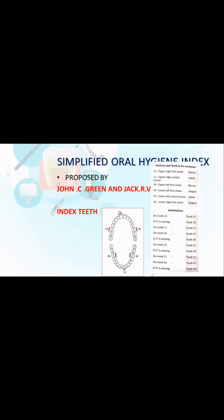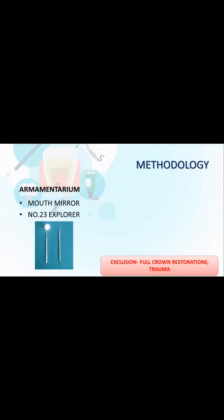For tooth 16, if absent, we substitute with 17; if 17 is also missing, we go to 19 if it is functional. The same applies for 26. If 11 is missing, we substitute with 21; if 21 is also missing, there is no substitution. In the lower arch, if a first molar (6) is missing, we go to 7, then to 8 if functional. For anteriors, if 31 is missing we use 41; if the anterior is missing in the upper arch we use 21. If the substituted tooth is also missing, we do not record that tooth.